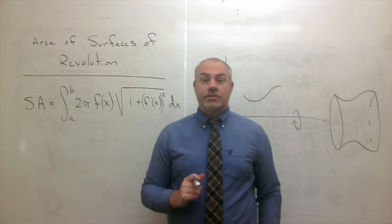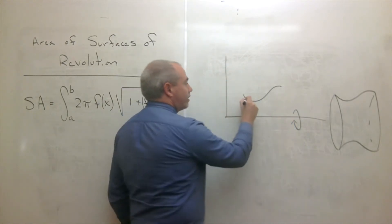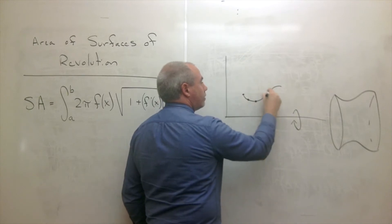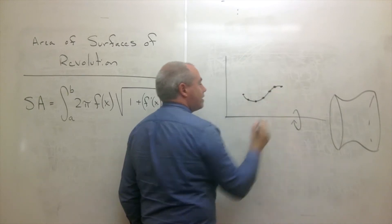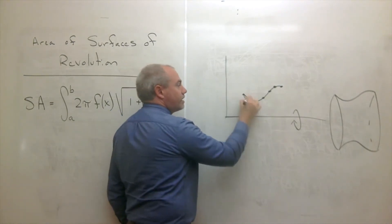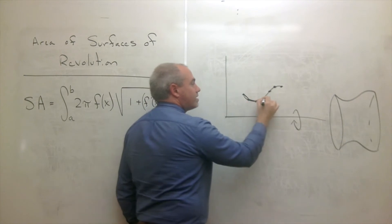And the way that we're going to do this is we're going to cut this into little pieces, just like we did for arc length, cut it into some little pieces. And then just like we did for arc length, I'm going to treat each of these pieces as a line segment.